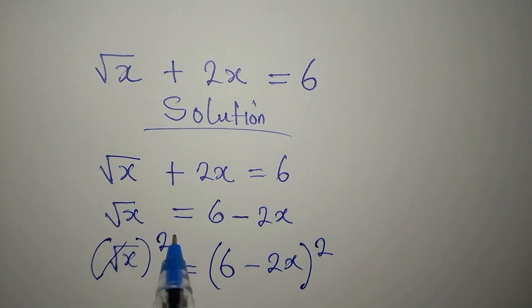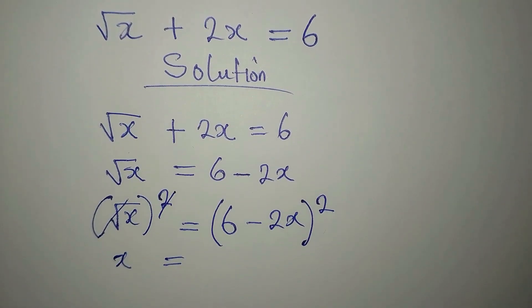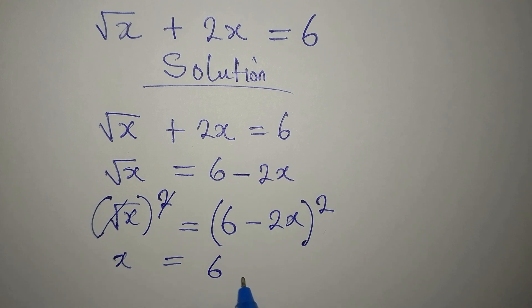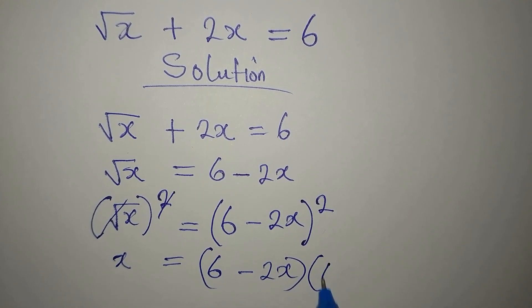Now this and this will go. So x is now equal to what we have here. But we are having 2 of these because of the square. We have 6 minus 2x multiplied by 6 minus 2x.